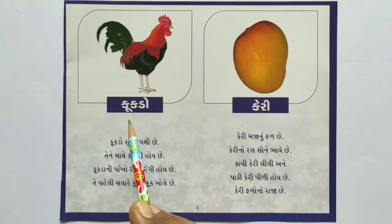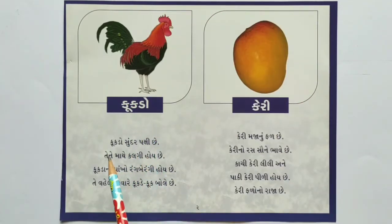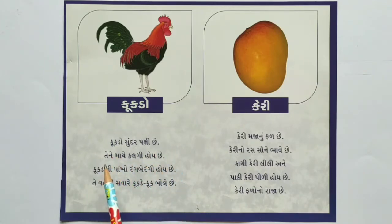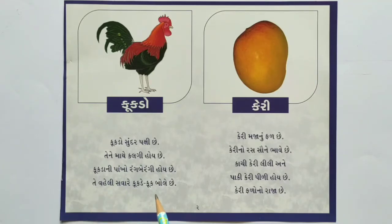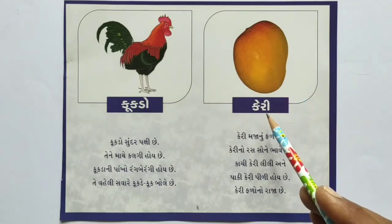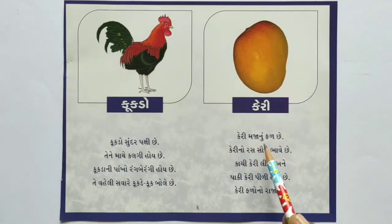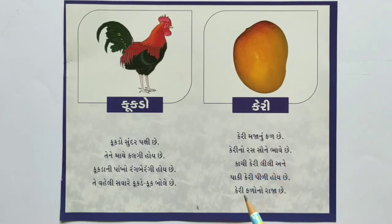કુકડો - સુંદર પક્ષી છે. તેને માથે કલગી હોય છે. કુકડાની પાંખો રંગ-બેરંગી હોય છે. તે વ્હેલી સવારે કુકડે-કૂ બોલે છે. કેરી - મજાનું ફળ છે. કેરીનો રસ સૌને ભાવે છે.